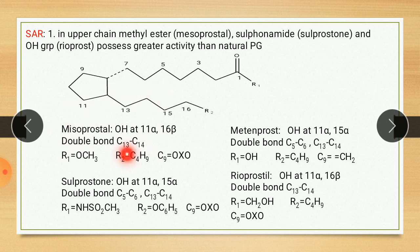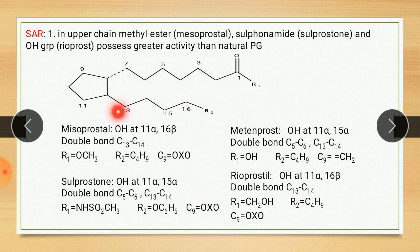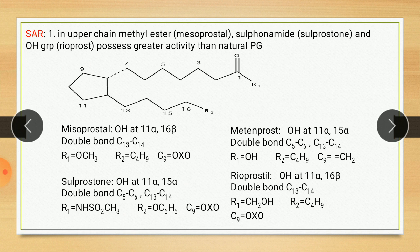In the case of misoprostol, R1 equals OCH3, meaning it is ester type. There is a hydroxyl group on the 11-alpha and 16-beta positions. Alpha means dotted line; beta means solid line. There is a double bond on the 13 and 14 position. R2 equals C4H9, and C9 equals an oxo group, meaning a ketonic group. So R1 may be ester — example misoprostol; may be sulfonamide — example sulprostone; or may be alcoholic group — example rheoprost.